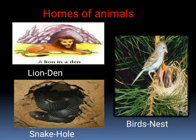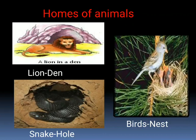Homes of animals. A home or shelter is a place that protects animals from heat, cold, rain and enemies. Some animals live in homes made by them, some live in natural shelters, and some live in homes made by us. Birds make their nest to lay eggs. They use cotton, twigs, dry leaves, sticks and straw to make their nest.